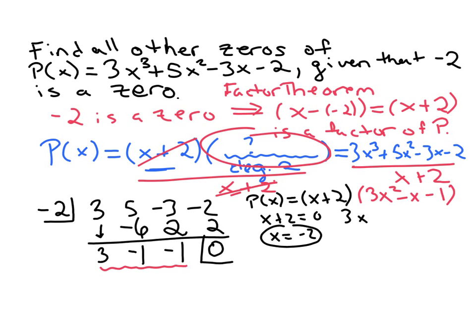So now we can set this quadratic function equal to zero. And here we'd be looking for the zeros of the quadratic. So first we might think about factoring it.